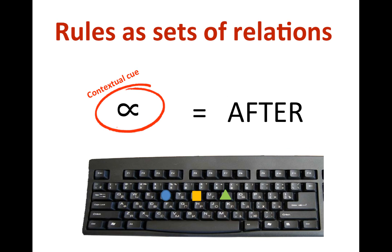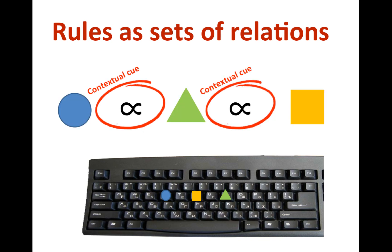Let's see briefly how rules and instructions work from an RFT perspective, using a simplified RFT experiment on instructional control. Imagine you have a keyboard with stickers on the keys, and you learn the meaning of a contextual cue such that you know it means 'after.' If you then see on the computer screen a series of pictures and contextual cues, you should be able to know what to do: first you press the yellow square, then the green triangle, and finally the blue circle. As you can see, contextual cues can tell you what to do.